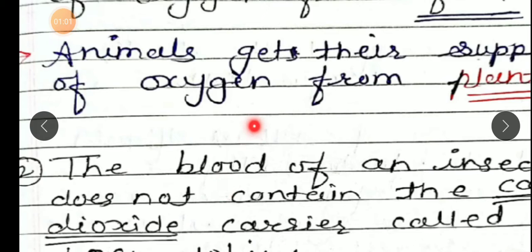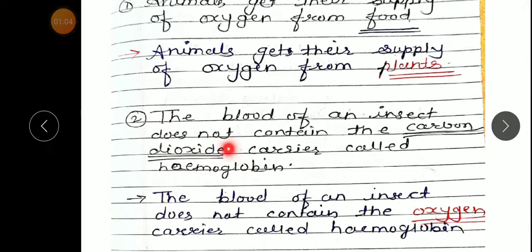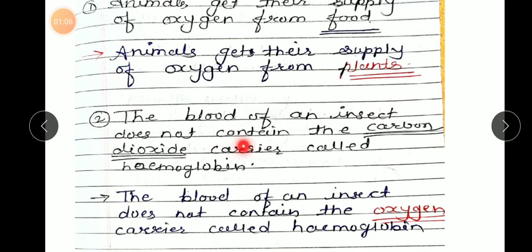Second: 'The blood of an insect does not contain the carbon dioxide carrier called hemoglobin.' Correct statement: The blood of an insect does not contain the oxygen carrier called hemoglobin.